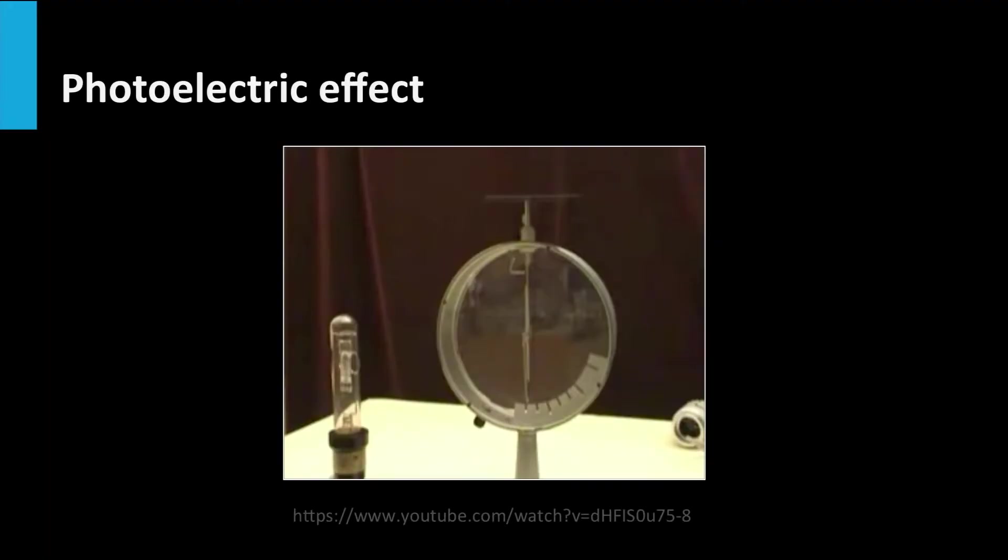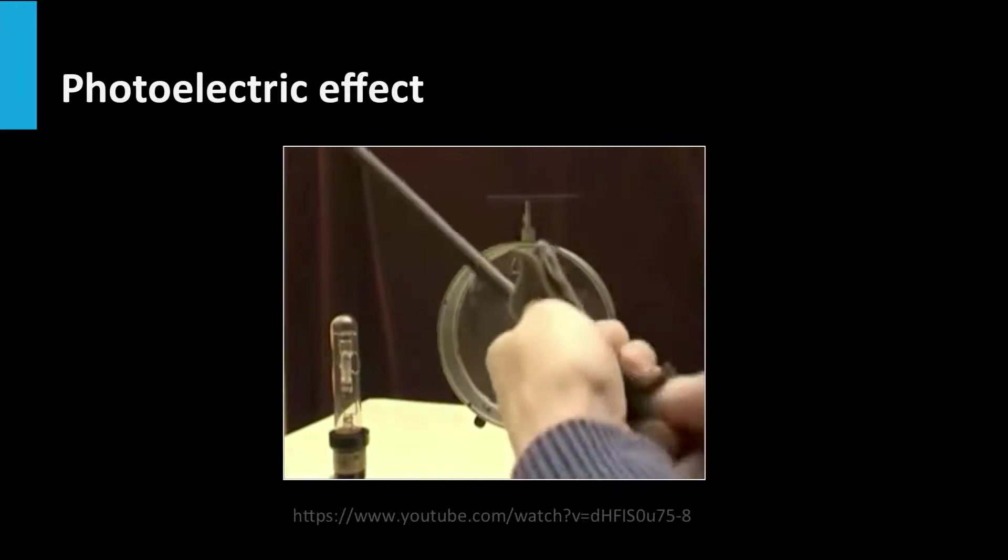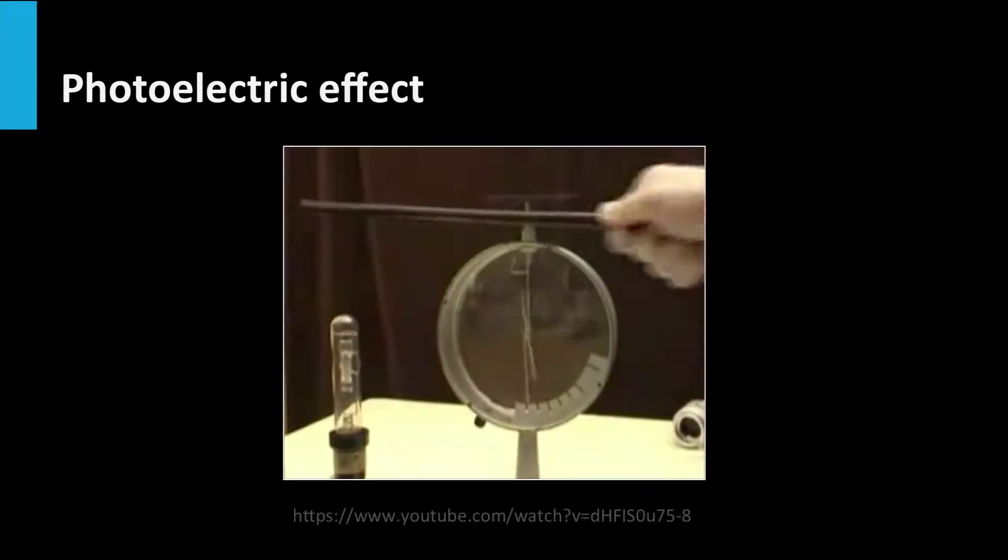The photoelectric effect is demonstrated in the simple movie I found on YouTube. You see here an electroscope. This is an instrument to demonstrate the presence of electric charge. Using static electricity, a bar is charged and the pointer indicates the amount of charge. At the moment the metal bar is negatively charged by a large amount of electrons.